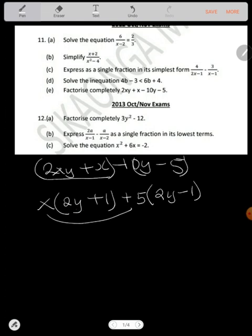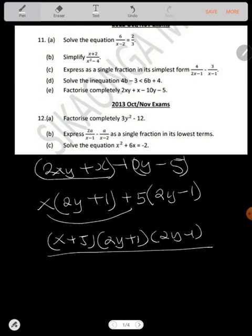So we collect this. Now since what we have here is not the same. So we are going to have x plus 5. This and this you combine. We have 2y plus 1. We have 2y minus 1. That's the answer.